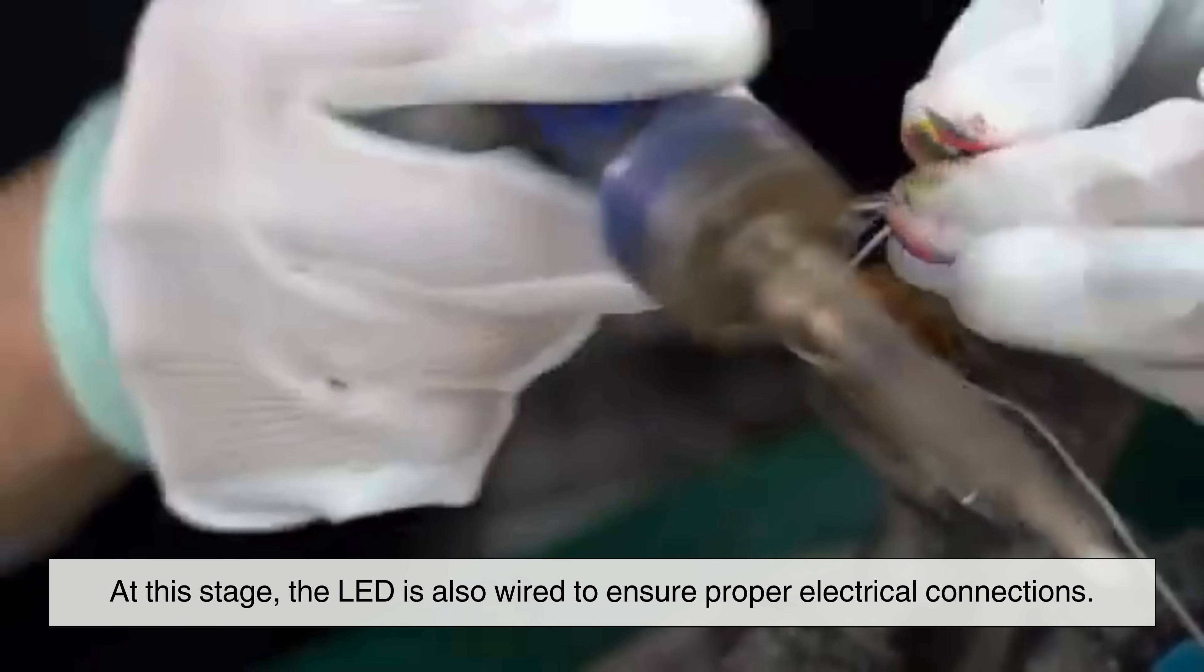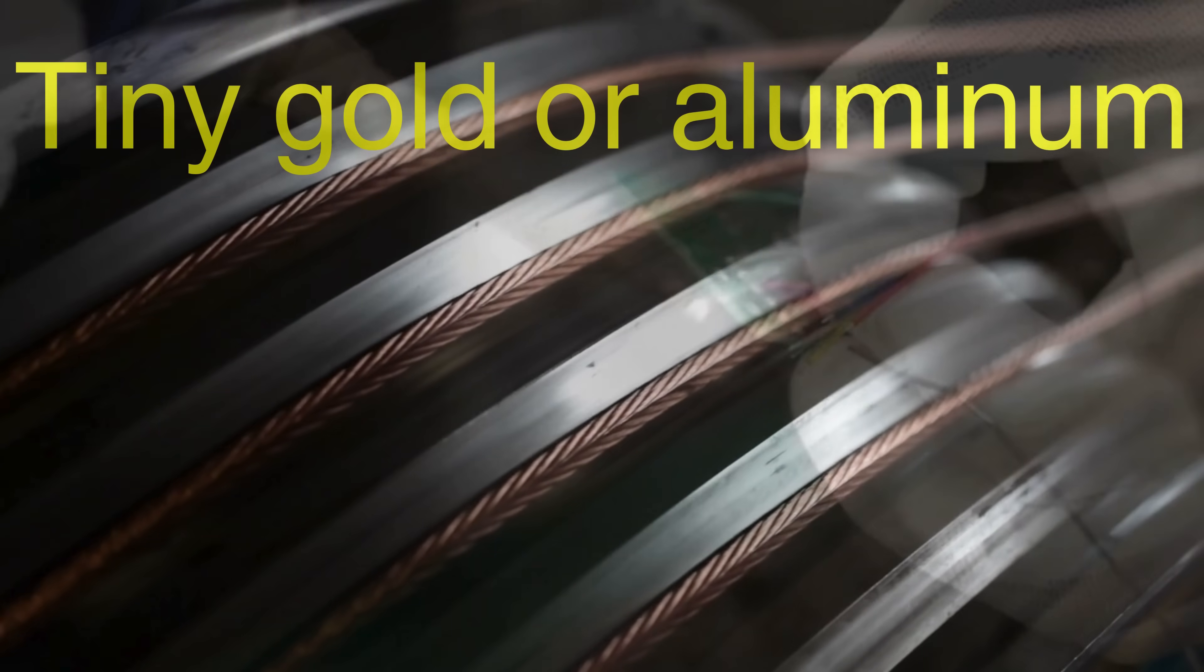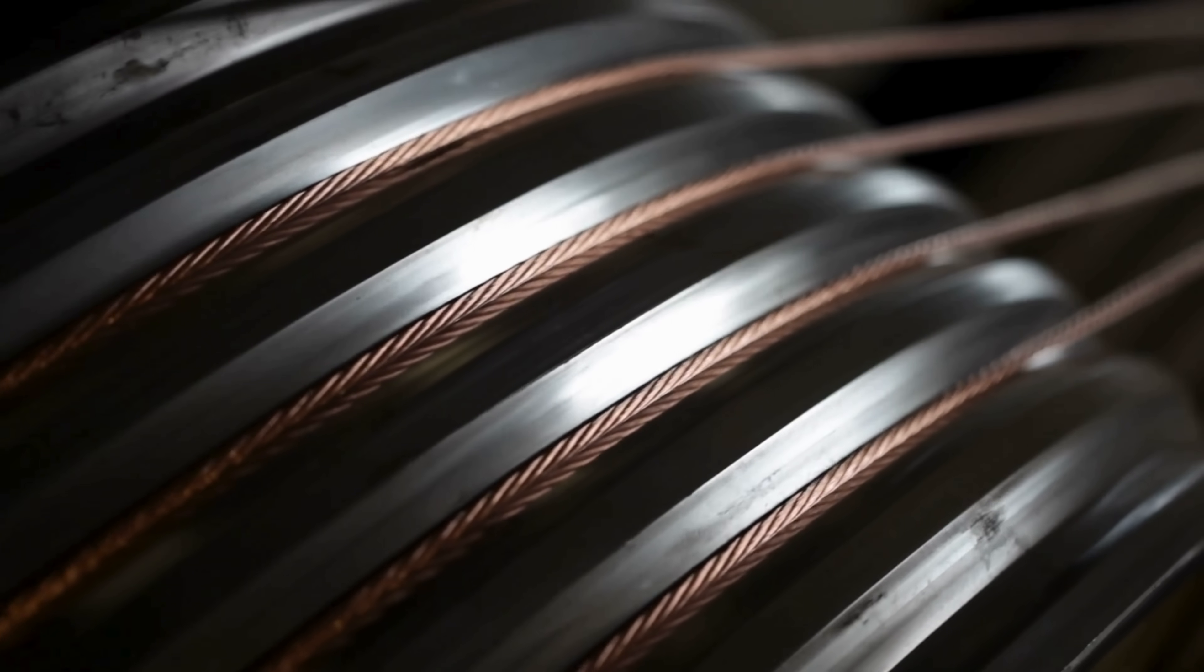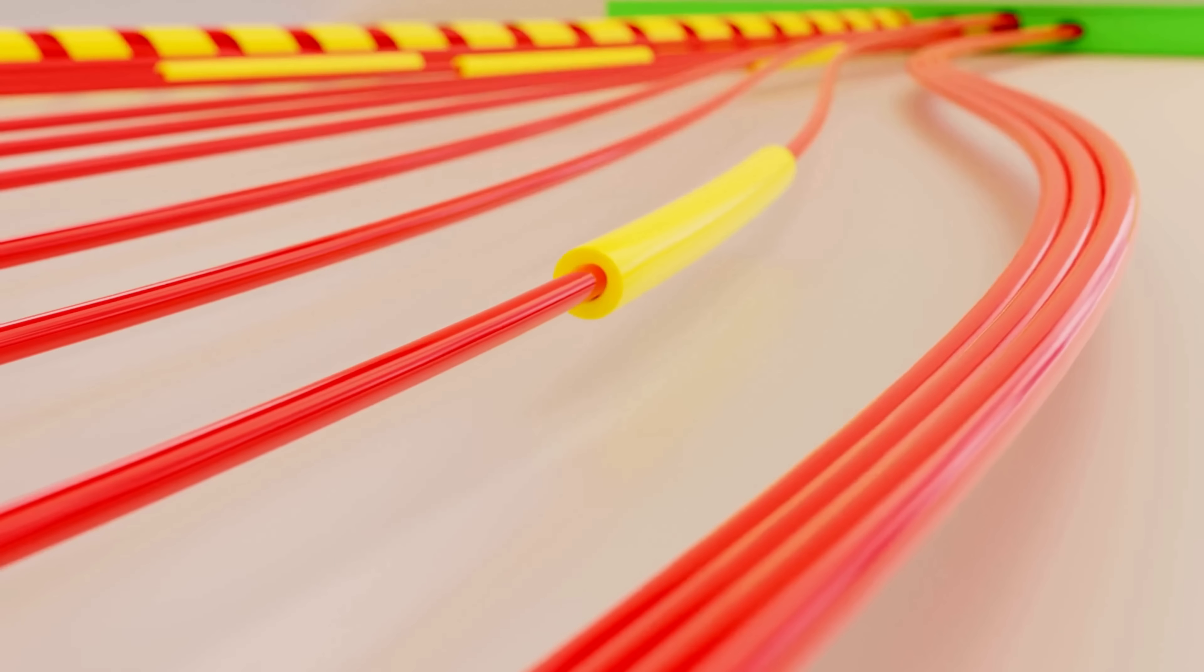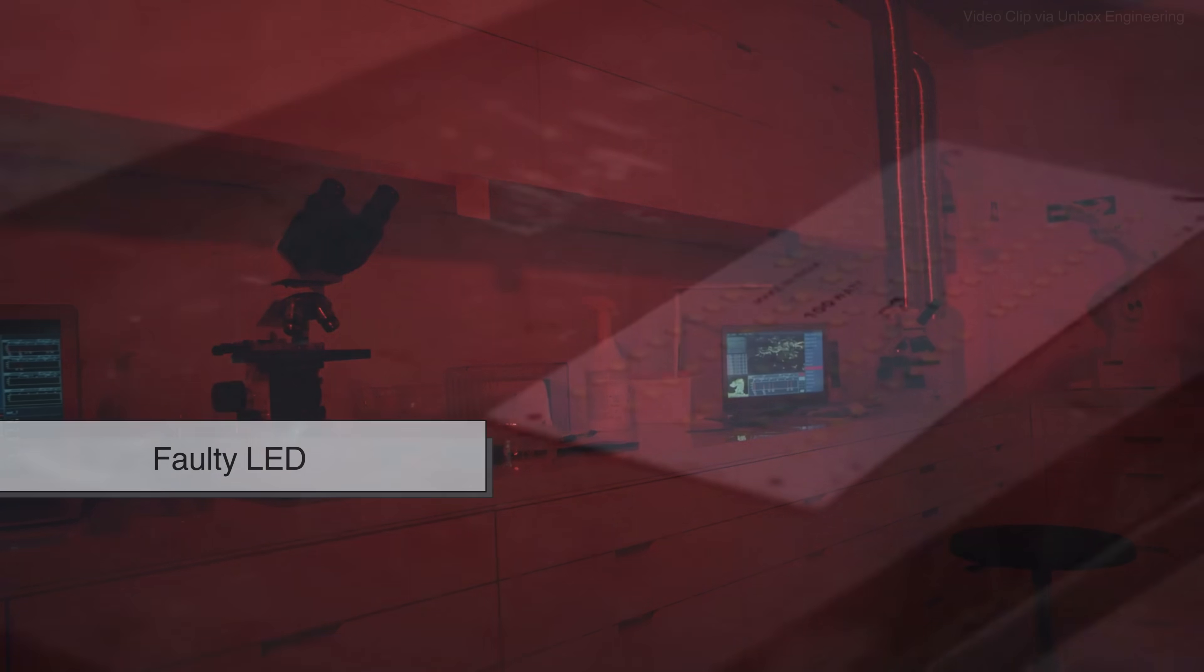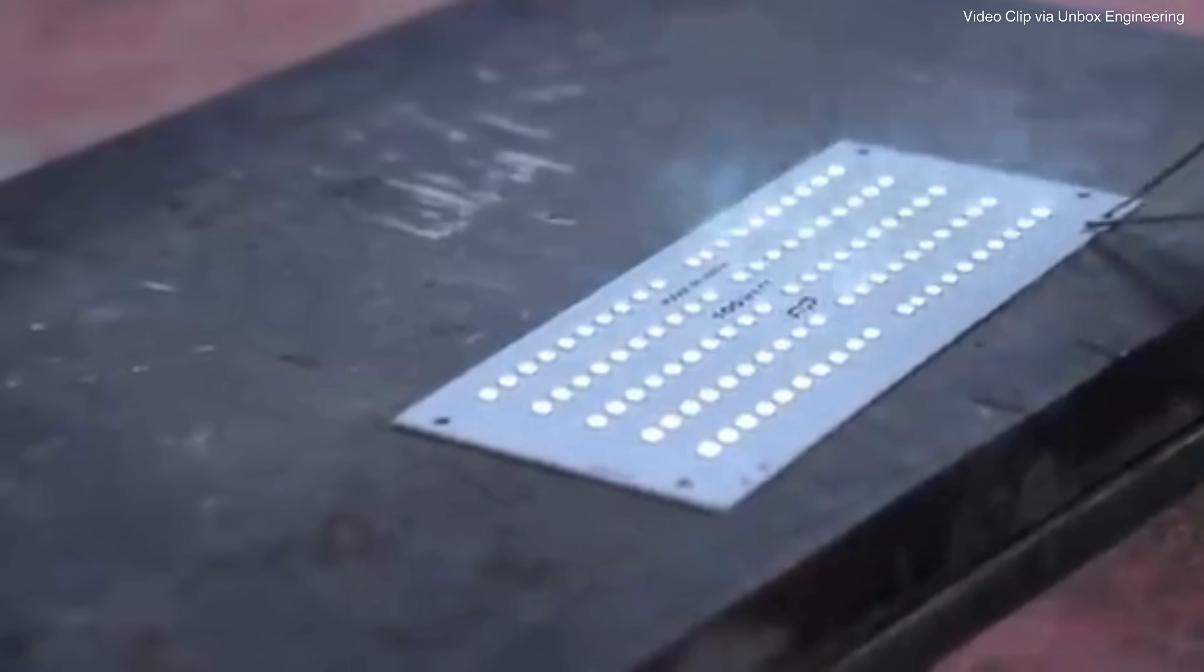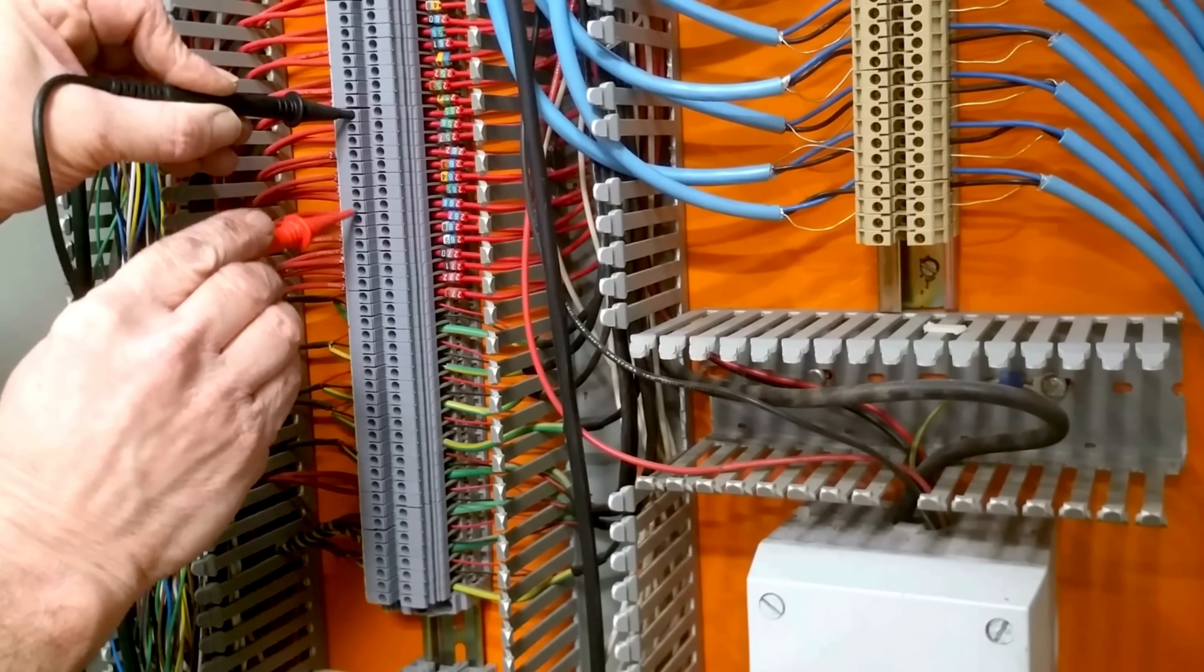At this stage, the LED is also wired to ensure proper electrical connections. Tiny gold or aluminum bonding wires are used to connect the LED chip to the circuit, allowing current to flow through the semiconductor material. These connections must be made with extreme precision, as any defects could result in a faulty LED. Once the wiring is complete, the LED package undergoes electrical testing to ensure it functions properly before proceeding to the next step.